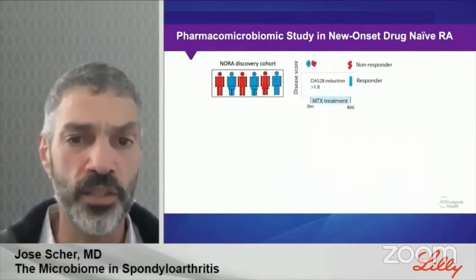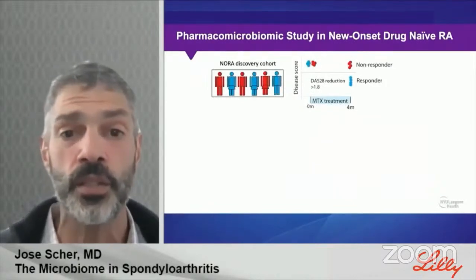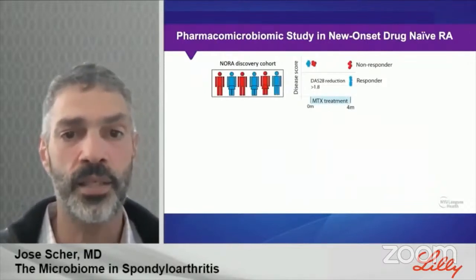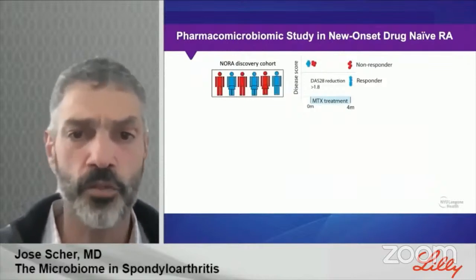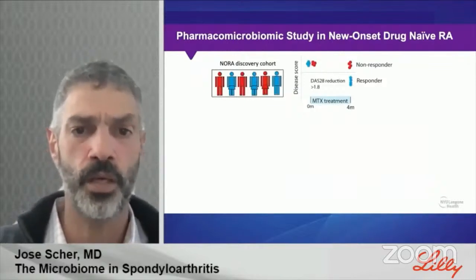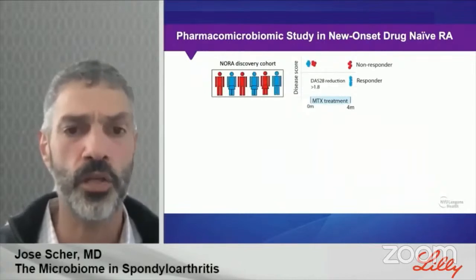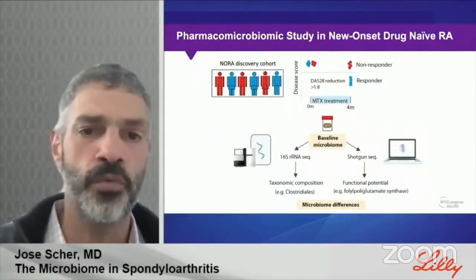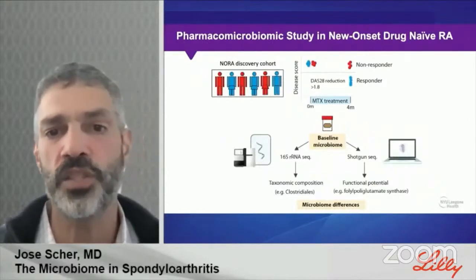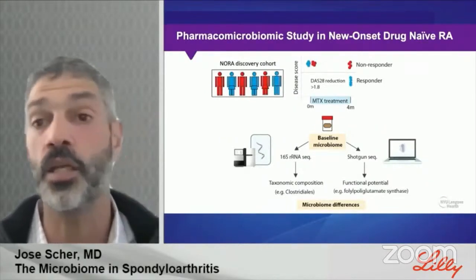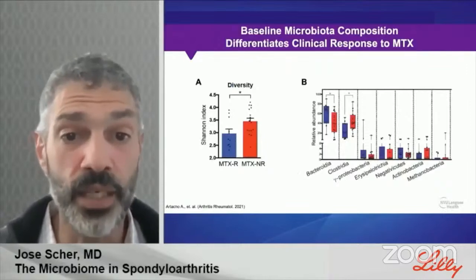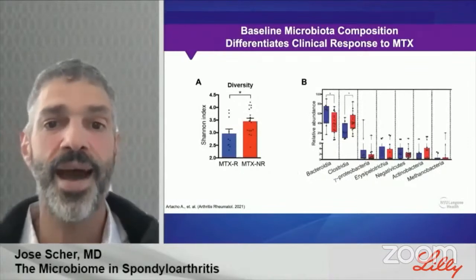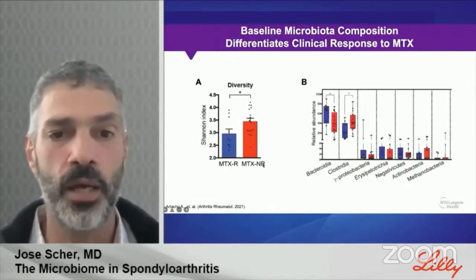Here's the study design: we enrolled a discovery cohort of new-onset rheumatoid arthritis patients and followed them longitudinally, classifying them as either responders or non-responders based on a very stringent definition dependent on DAS28 reduction. We collected baseline microbiomes and subjected samples to both 16S and shotgun sequencing with the goal of understanding whether any differences could be characteristic of non-response. And indeed, patients who did not respond to methotrexate had higher gut microbiota diversity.